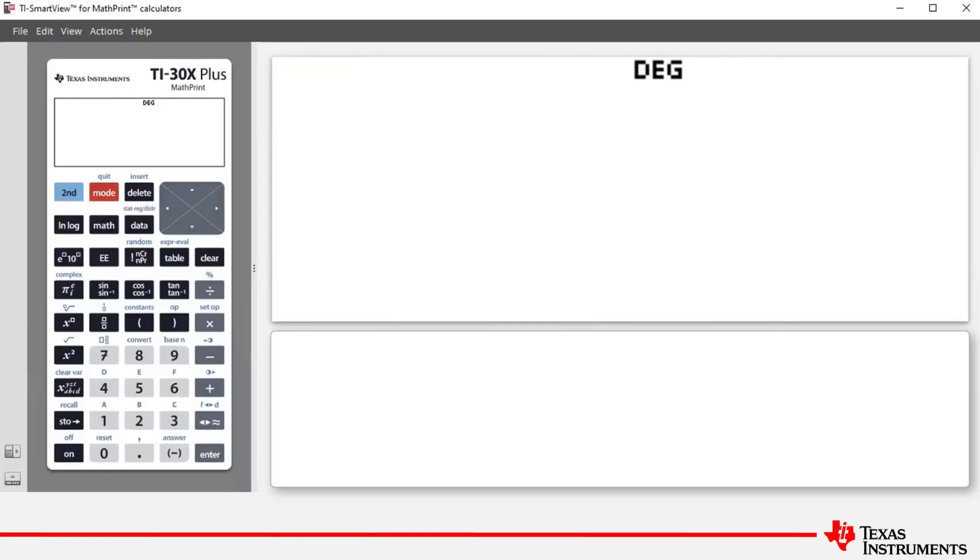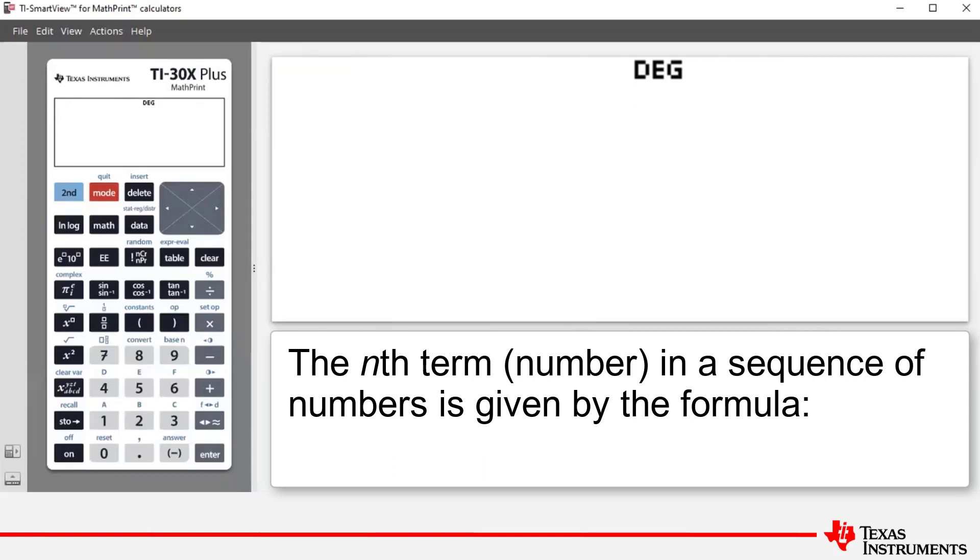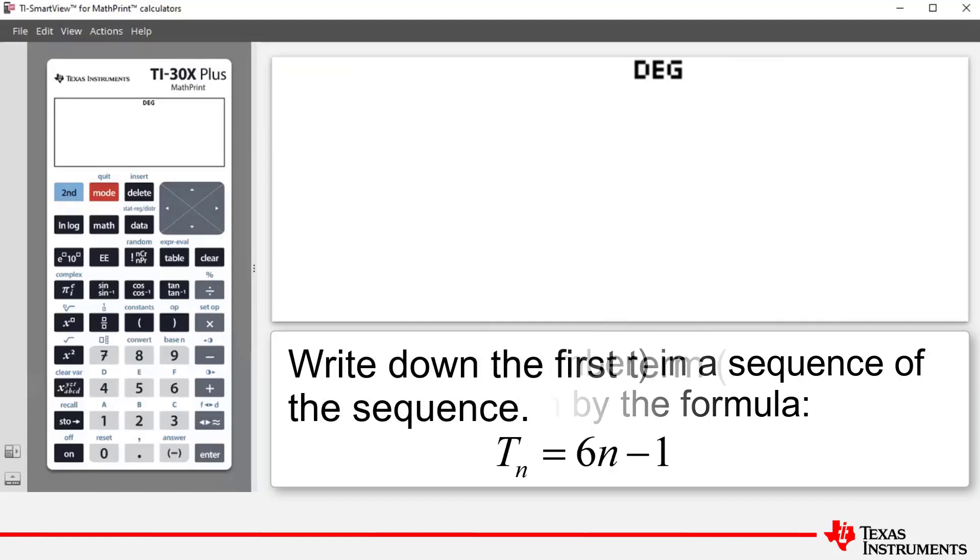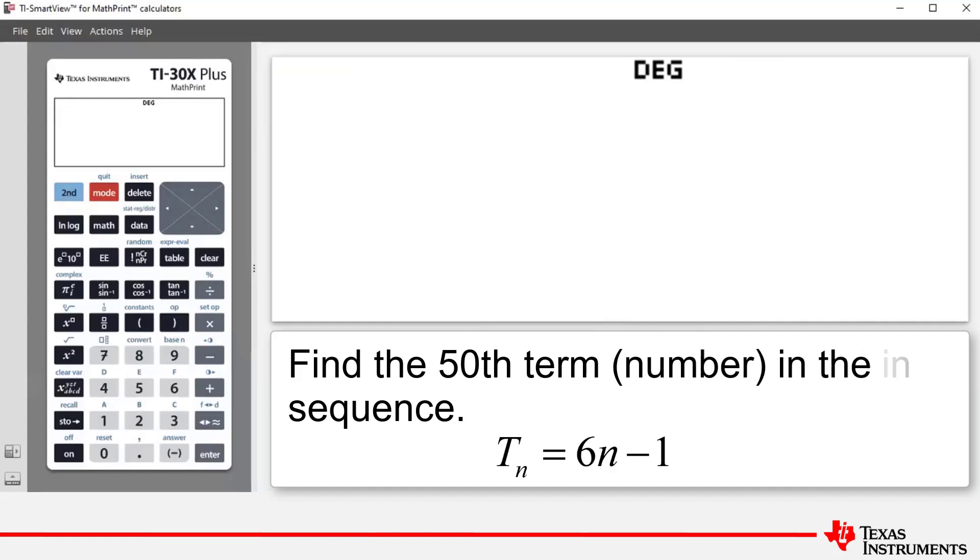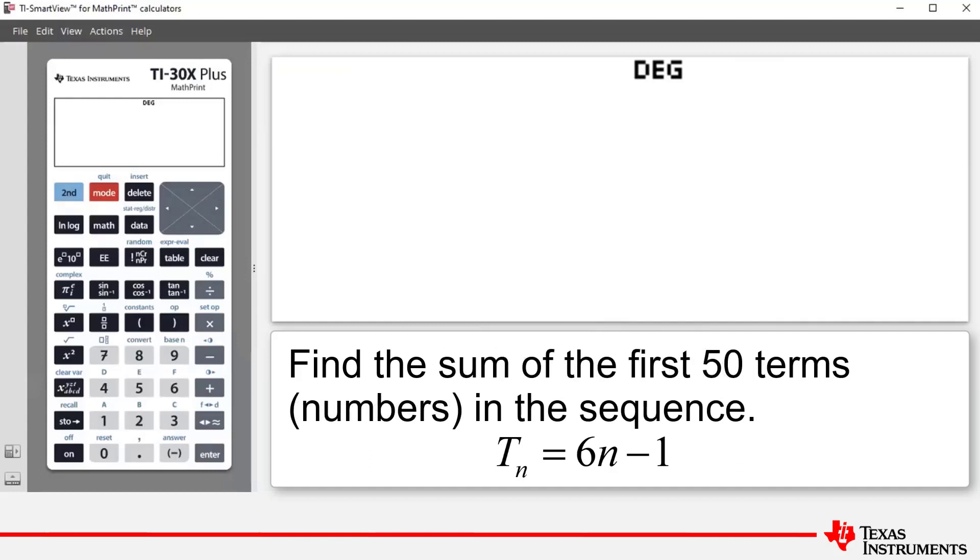The example that we're going to look at says the following. The nth term or number in a sequence of numbers is given by the formula T_n equals 6n minus 1. Part A is write down the first term or number in the sequence. Part B is find the 50th term or number in the sequence. And part C is find the sum of the first 50 terms or numbers in the sequence.